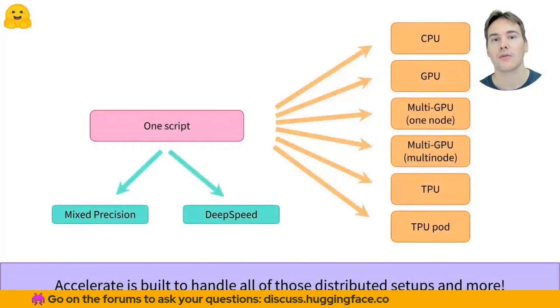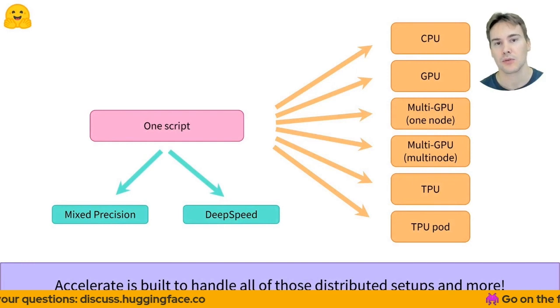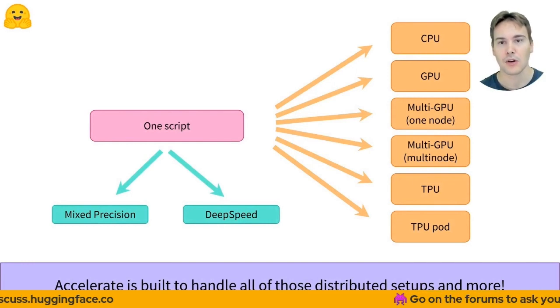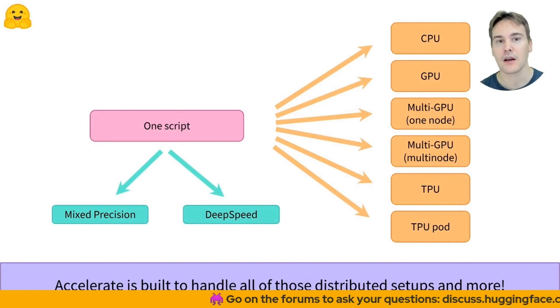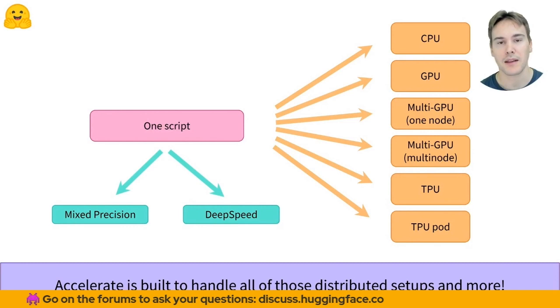Accelerate has been created to solve that problem. By learning one new API that requires a few changes to your script, you then get something you can run on all kinds of distributed setup which also supports mixed precision training or advanced techniques like zero data parallelism or zero offload developed by DeepSpeed.